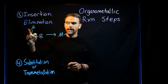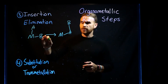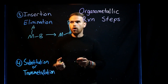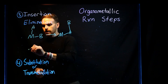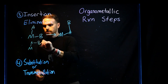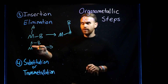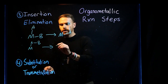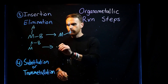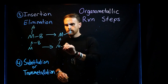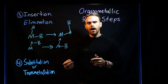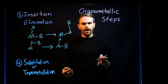This occurs via an insertion pathway where one ligand structure is inserting into the other. The microscopic reverse is called elimination. For example, if you have a single ligand on the metal, a piece of that is removed and attached to the metal, and you end up with two new ligands where you started with one. A common example of this is beta-hydride elimination.